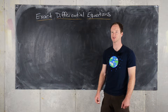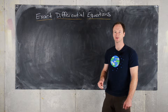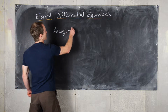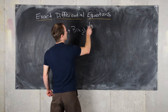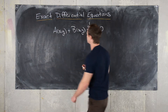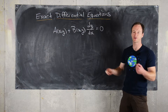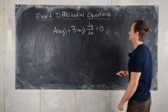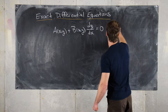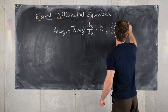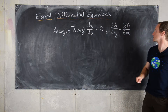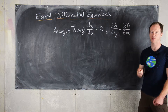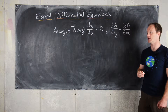Here we're going to talk about a class of differential equations known as exact differential equations. These are equations of the form A(x,y) + B(x,y) dy/dx = 0. Every first order differential equation can be put in this form, but these satisfy an additional property: partial A with respect to Y equals partial B with respect to X. They also require that these partial derivatives are continuous on some rectangle in R2.